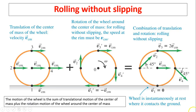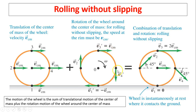For rolling without slipping, the motion of the wheel is the sum of translational motion of the center of mass plus the rotational motion of the wheel around the center of mass. Rolling without slipping means the wheel is instantaneously at rest where it contacts the ground — at that point the velocity has to be zero. That means the tangential velocity has to be equal and opposite to the velocity of the center of mass. So v_2 prime, v_3 prime, and v_4 prime in magnitude all have to equal v center of mass.